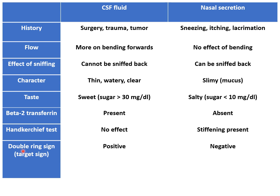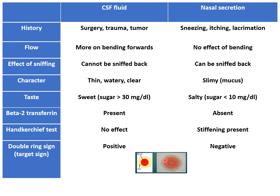Another clinical test is the double ring sign, also called target sign or halo sign. It is especially seen if the CSF leak is traumatic in nature. If there is a history of trauma and nasal discharge, that discharge is put on a filter paper. If it is CSF mixed with blood, the blood collects in the center and the CSF forms a halo around that blood spot in the periphery. This is called the halo sign, double target sign, or ring sign — positive in case of CSF leak, but absent in nasal secretions.